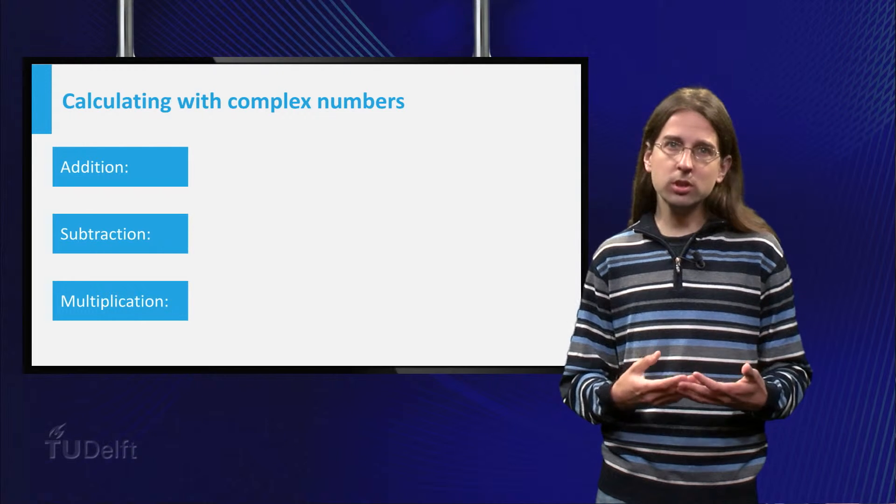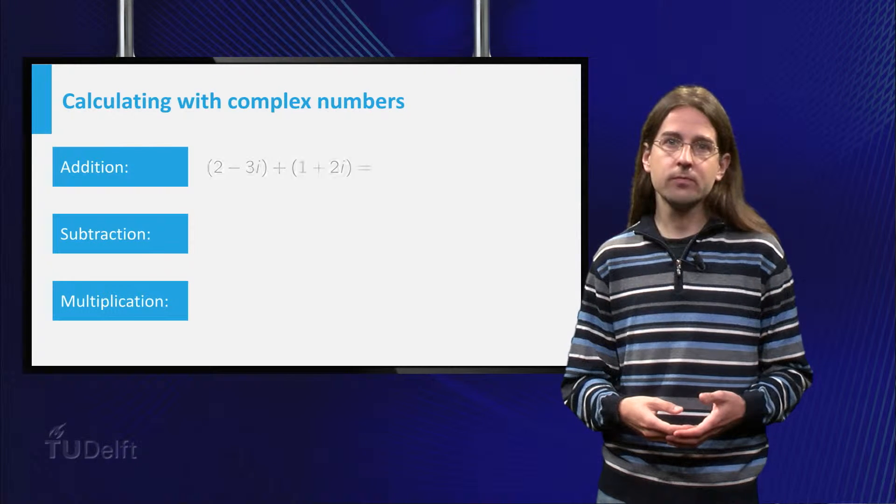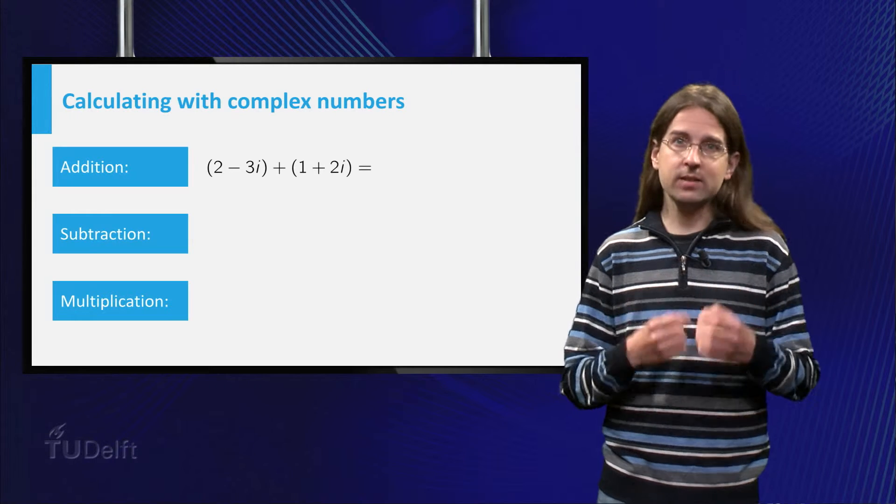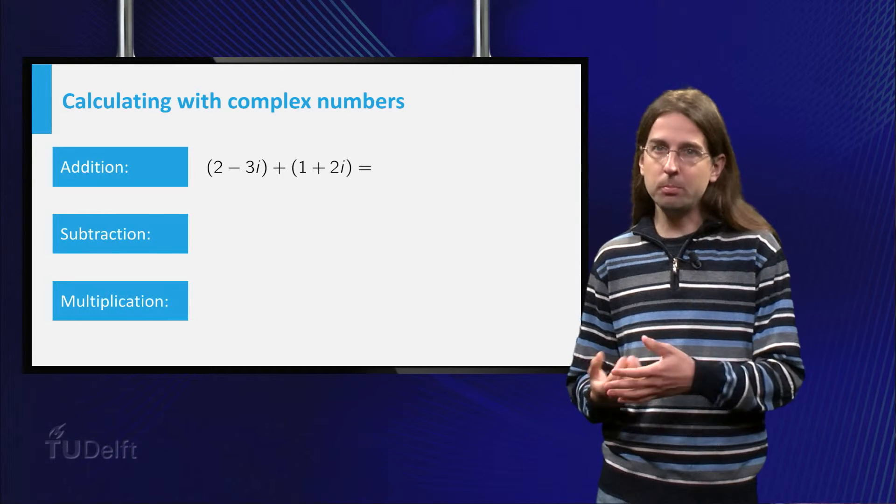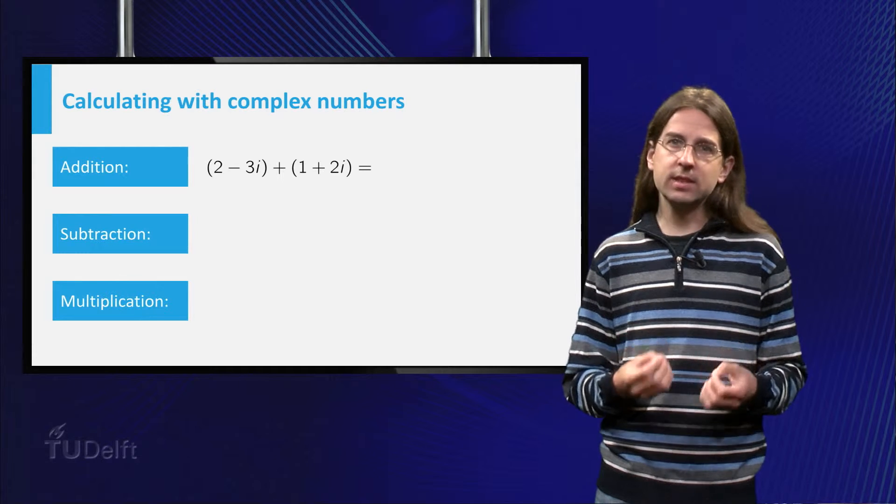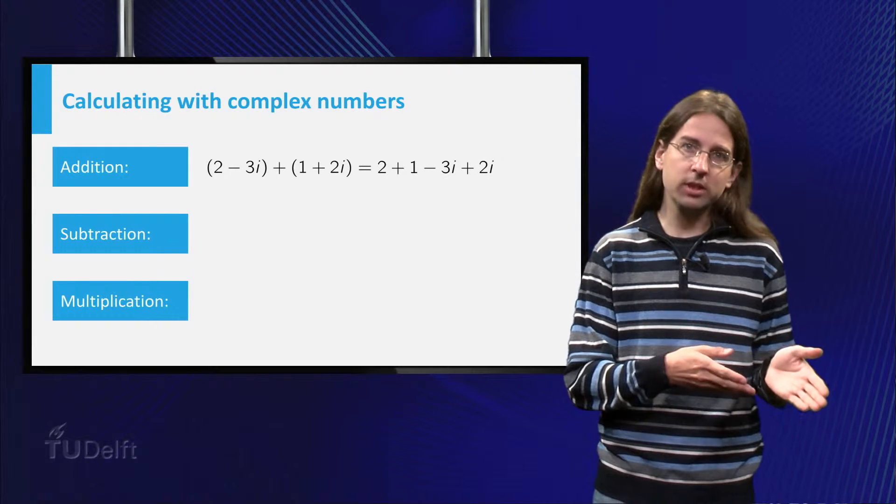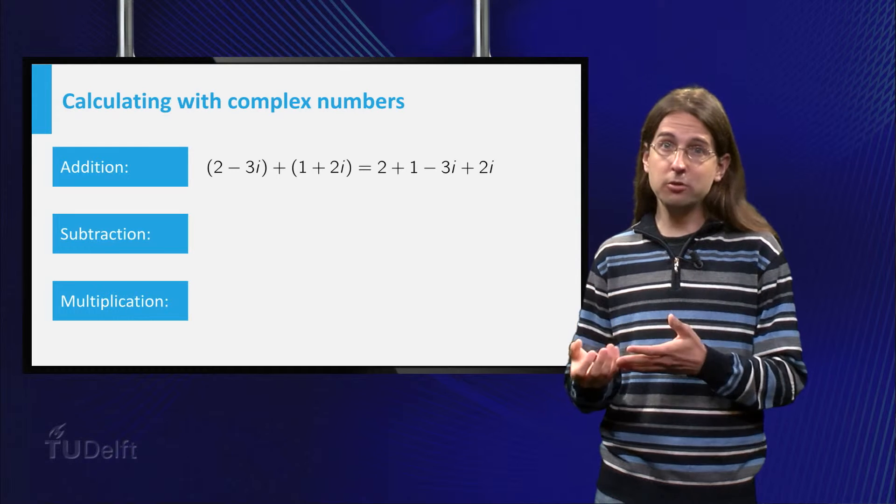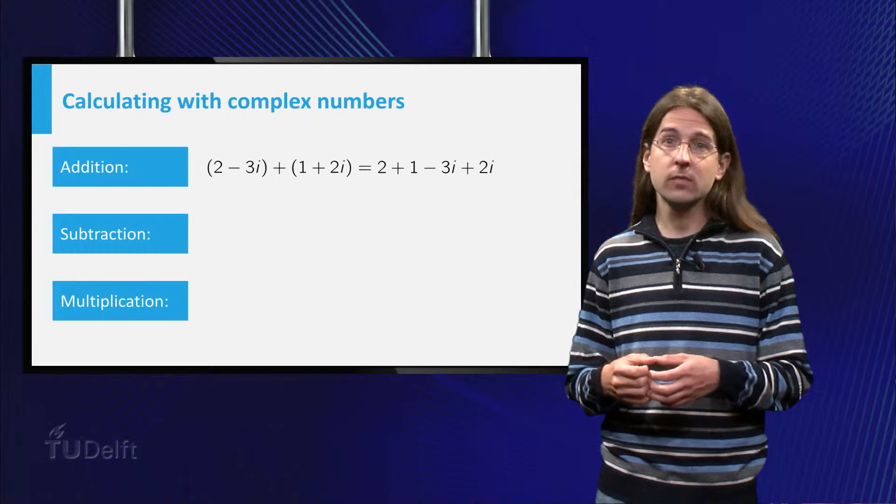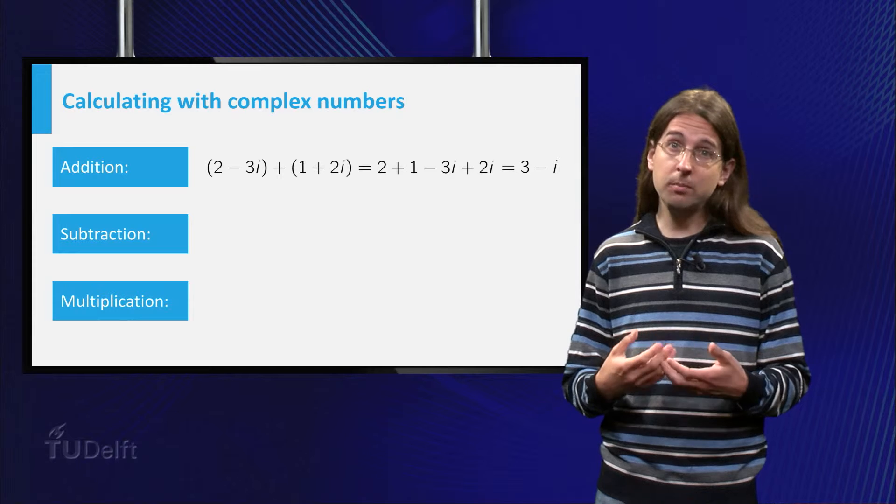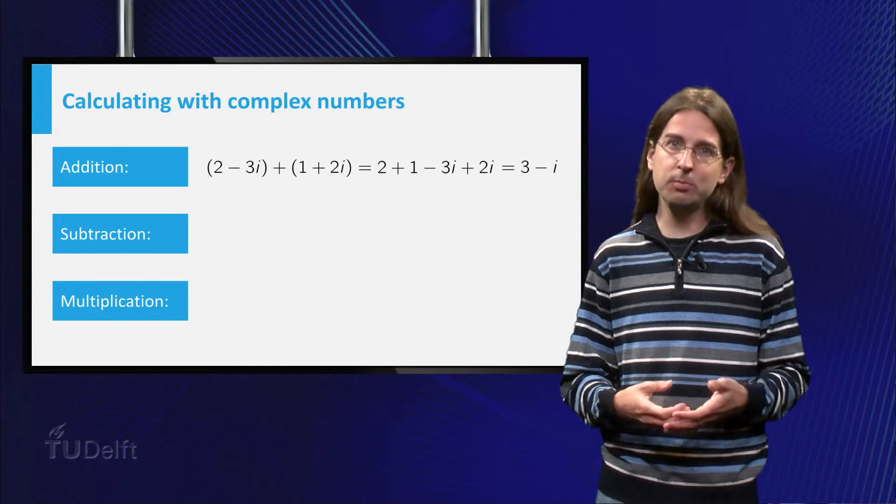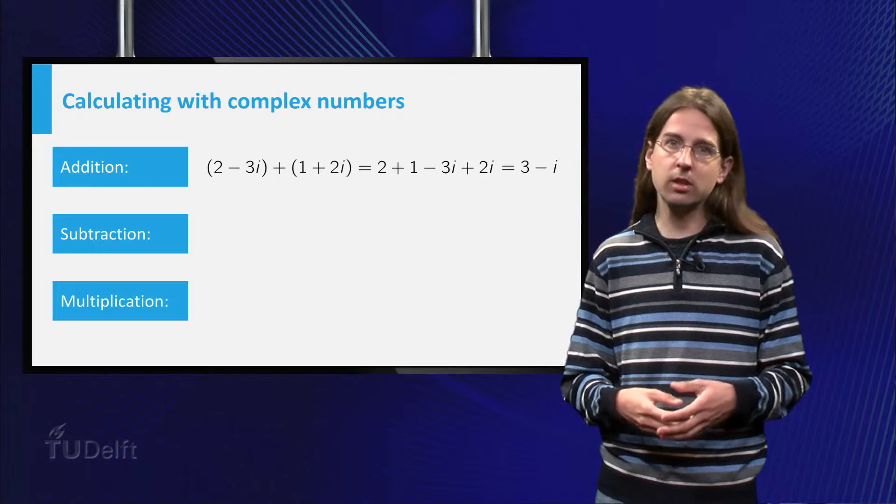Let us look how this works in some examples. If we add two complex numbers, 2 minus 3i and 1 plus 2i, we just add the real parts and the imaginary parts: 2 plus 1 plus minus 3 plus 2i. The result 3 minus i is already of the form x plus i times y, so we are done.